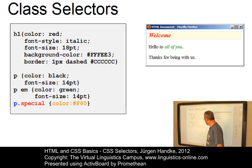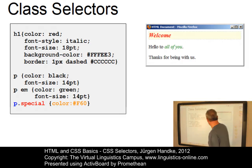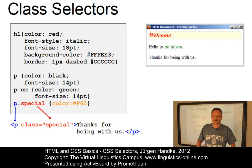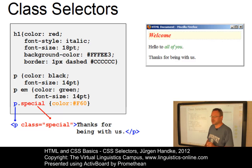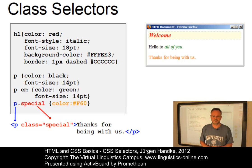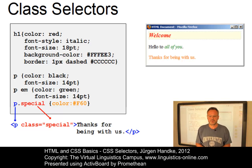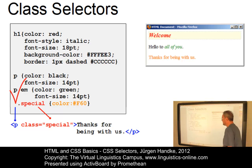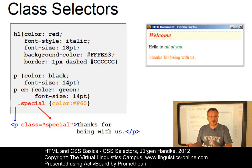Here we would define the color orange for particular paragraphs. In the HTML code, we can add the attribute 'class' with the value 'special'. As a result, this particular P tag displays the text in an orange color. Only P tags given the class attribute 'special' are displayed in that color. If you want to apply the rule to other elements, it is possible to leave out the HTML tag, making it applicable to other tags with the class attribute 'special'.